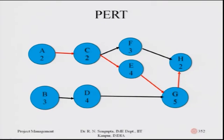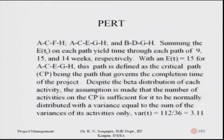I have drawn the graph based on the precedence diagram — note that two nodes start, which should be avoided. The red line joining A to C, C to E, E to G, and G to H is the critical path. The paths are: A-C-F-H, A-C-E-G-H, and B-D-G-H. Summing expected values on each path yields durations of 9, 15, and 14 weeks respectively, with A-C-E-G-H being the critical path at an expected value of 15 weeks.